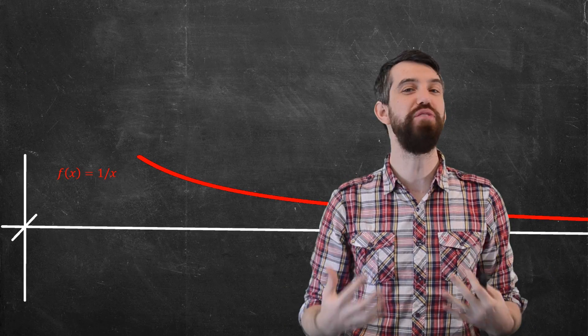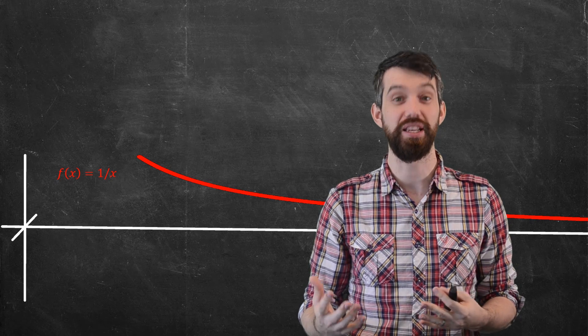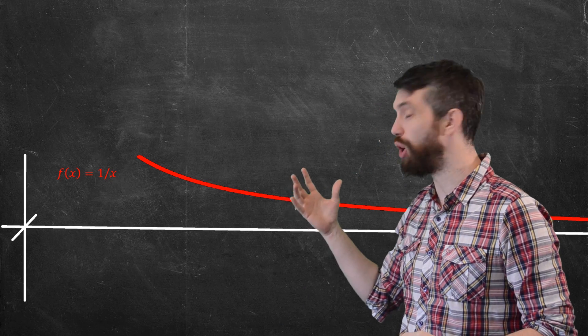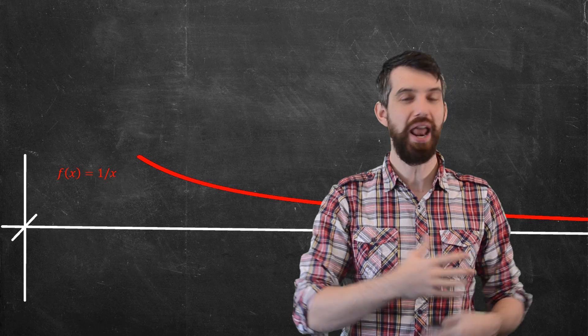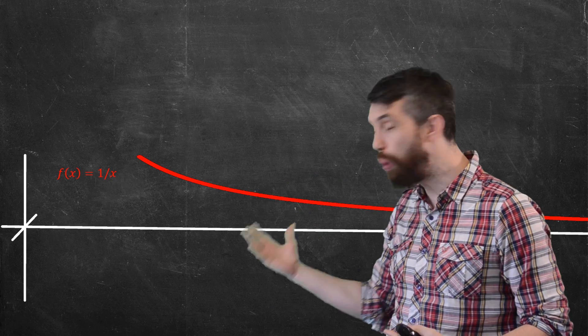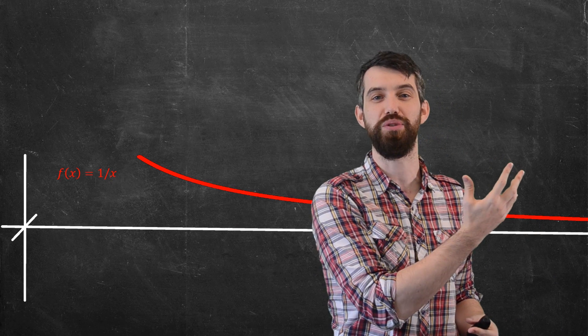Today we're going to talk about one of my favorite examples in all of calculus, Gabriel's horn. Now the way this example works is I begin with the function 1 over x. And I'm considering this under the infinite domain of x equal to 1 all the way to x equal to infinity.